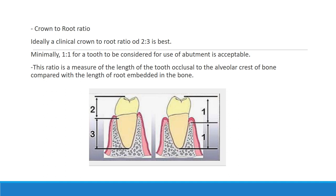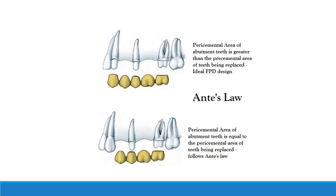The best crown-root ratio is 2:3 — that is very ideal. It can also be 1:1, which is favorable. The ratio is a measure of the length of the tooth occlusal to the alveolar crest of the bone compared with the length of the root embedded in the bone. According to Ante's law, the periodontal area of the abutment teeth must be greater than the periodontal area of the teeth being replaced.